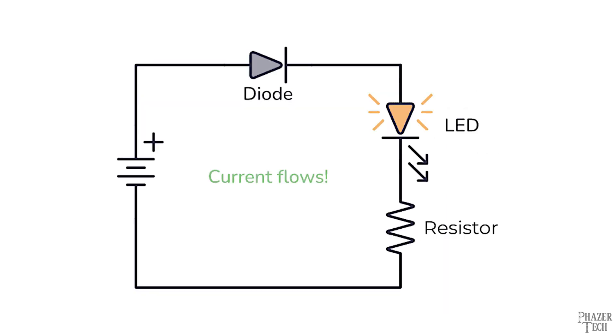So if the diode is placed in a circuit like this, the current will flow through the circuit and light up the LED. LEDs are also a type of diode themselves, but more on that later. Now if we place the diode in this orientation, it will stop the current from flowing and the LED won't light up.